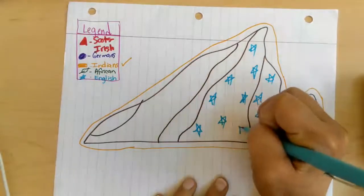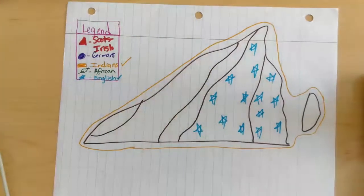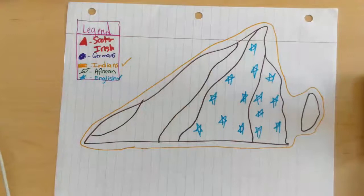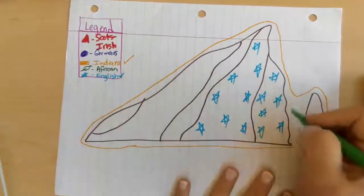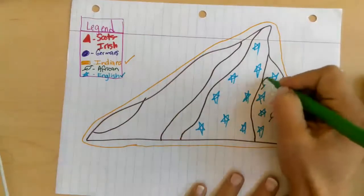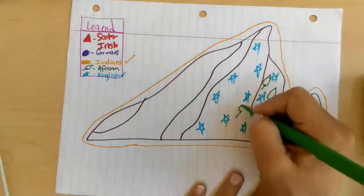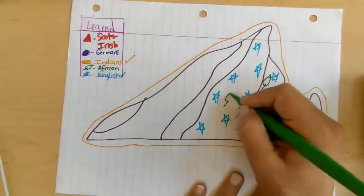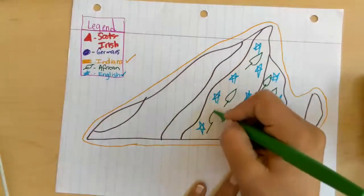And these stars do not have to be perfect. We're going to check off the English. Okay, our next group that came to Virginia was the African men, women, and children, and they are represented by the green tobacco leaf. And they also lived in the coastal plain tidewater region, so we're going to represent the African culture with the tobacco leaf.